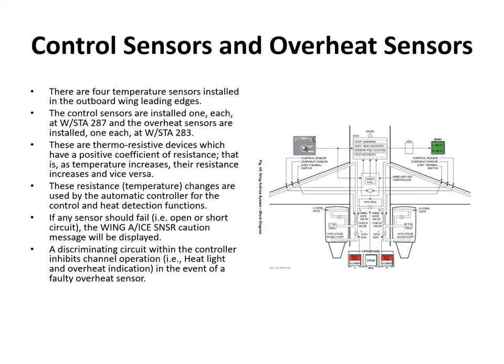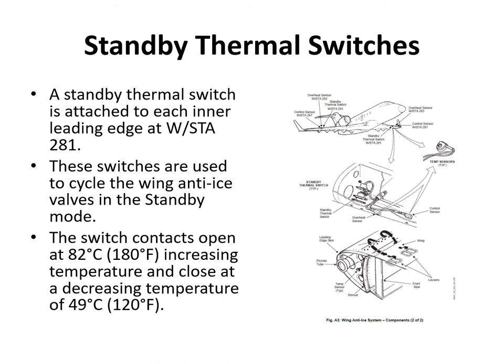A discriminating circuit within the controller inhibits channel operation in the event of a faulty overheat sensor. In addition to the four automatic control sensors, there are two standby thermal switches - one on each side - to operate the anti-ice system in standby mode. With switch contacts open, the system is off. As the temperature falls to 49°C, the switch closes, reactivating the anti-ice system. In standby mode the wing anti-ice system cycles between 49°C and 82°C, whereas in automatic mode it maintains a fixed temperature of 87.7°C.